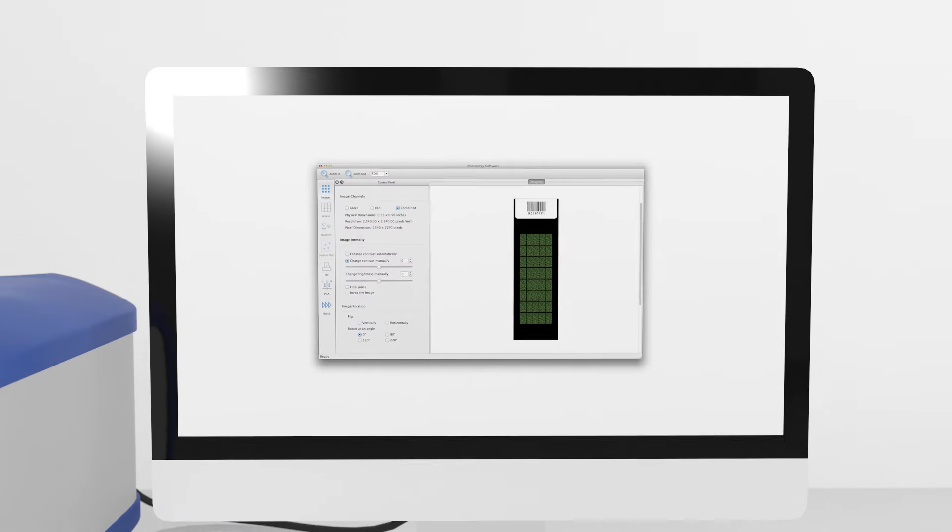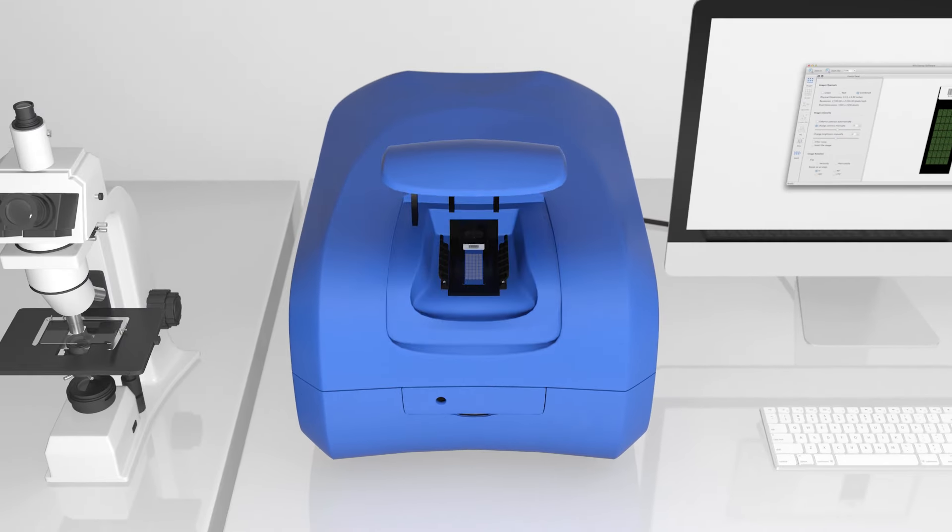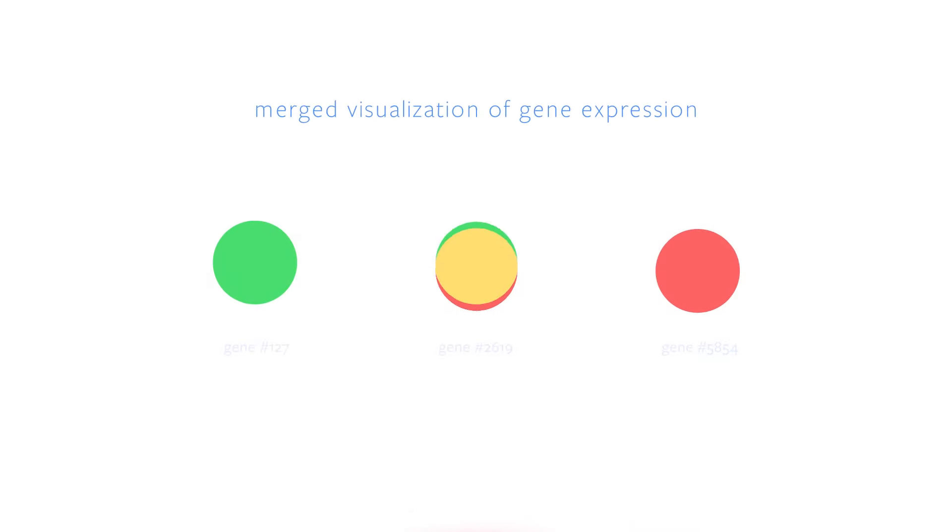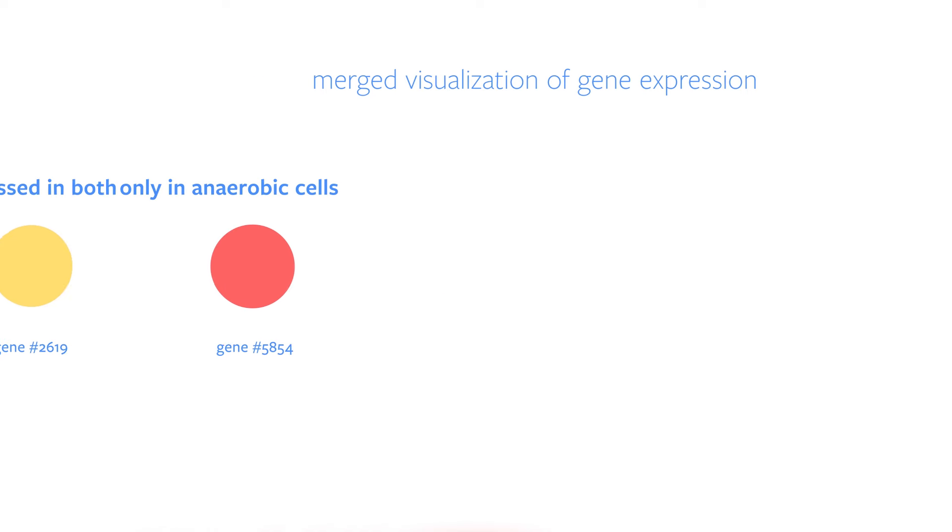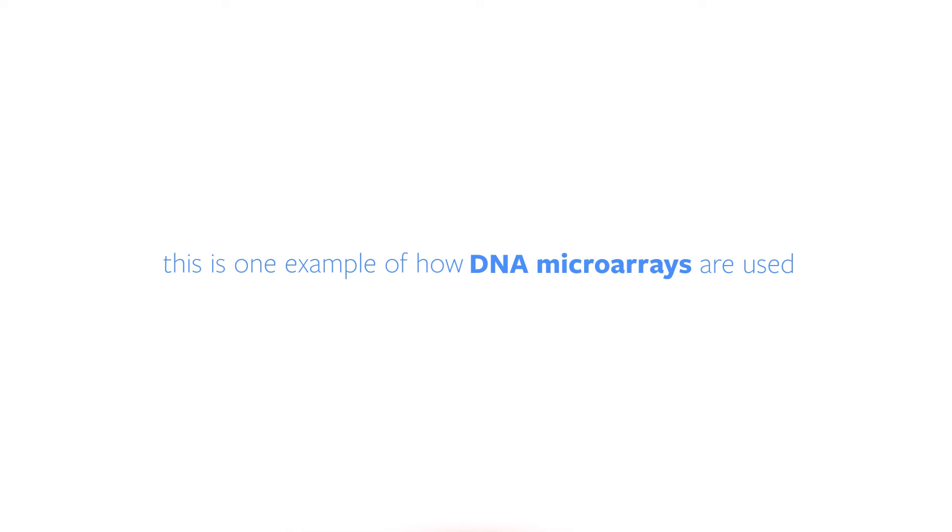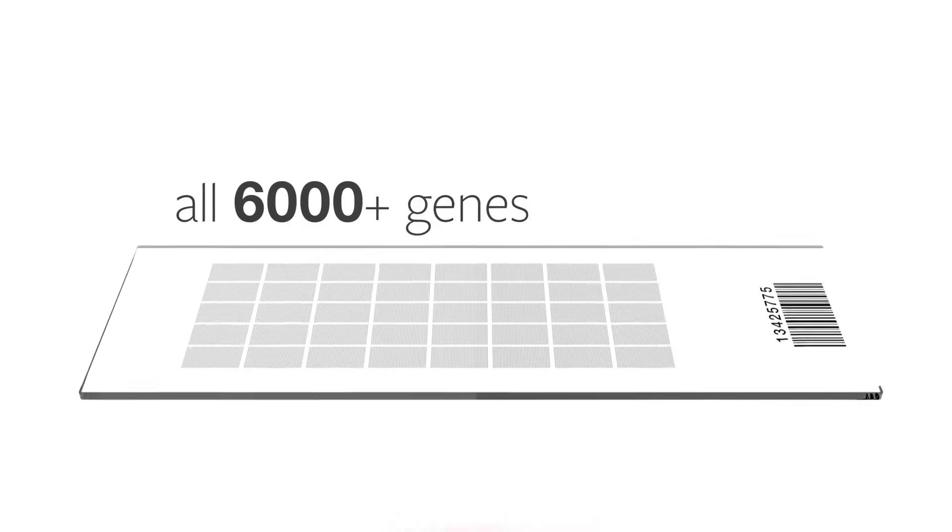Now, we move to the analysis phase. After we eject and safely store the microscope slide, we retrieve the red and green images from the computer and create a merged visualization. In the merged image, we see an aerobic gene labeled in green, an anaerobic gene labeled in red, and a gene labeled in yellow that was expressed in both aerobic and anaerobic conditions. This is one example of how DNA microarrays are used. In an actual experiment, quantitative analysis would be conducted on all 6,000 genes.